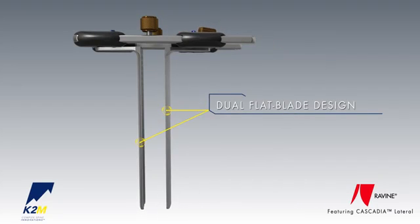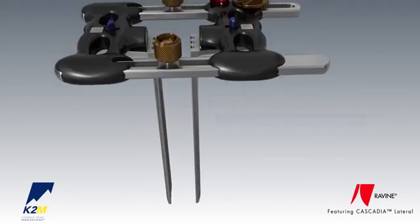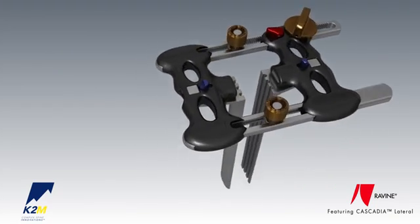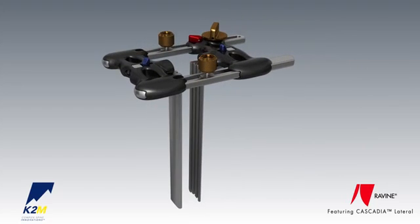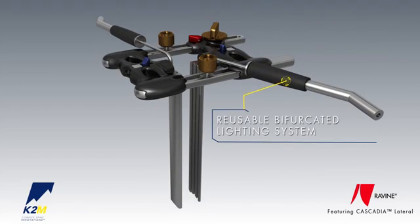With its dual flat blade design, the Ravine Retractor provides a true muscle-splitting transsoas approach and offers direct visualization to the disc space. The Ravine Lateral Access System includes a wide range of versatile instruments, as well as a reusable, bifurcated lighting system.